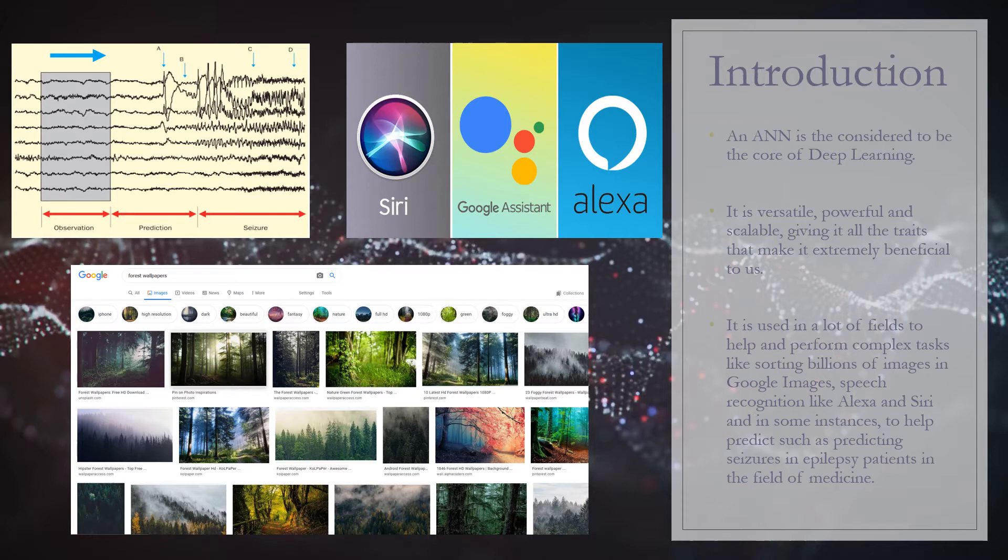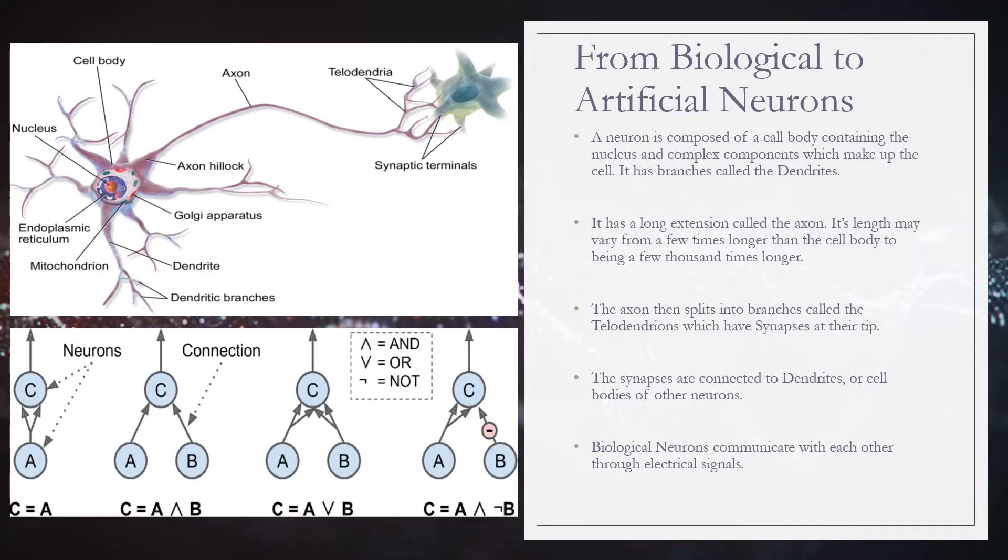The neuron is composed of a cell body that contains the nucleus, along with the other complex components that make up the cell, numerous branching extensions called the dendrites, and a very long extension called the axon. The axon's length can be a few times longer than the cell body, or a few thousand times longer, depending on numerous factors.